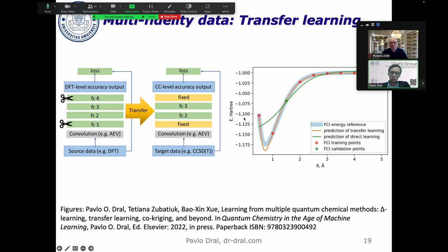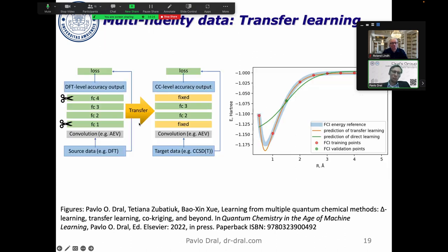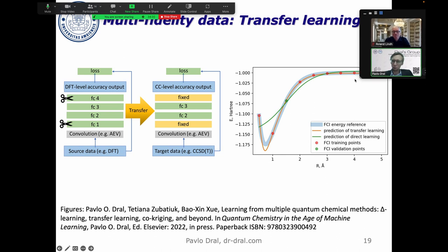Transfer learning is very similar - you use two levels. We can train neural network on all this curve, UHF. We can get perfect neural network model for this UHF curve. But now we fix many parameters and only optimize some parameters to fit on these training points from full CI. This way we get already also reasonable minimum. This is prediction of transfer learning which is a bit off but it's now correct. That was explanation of these two approaches.